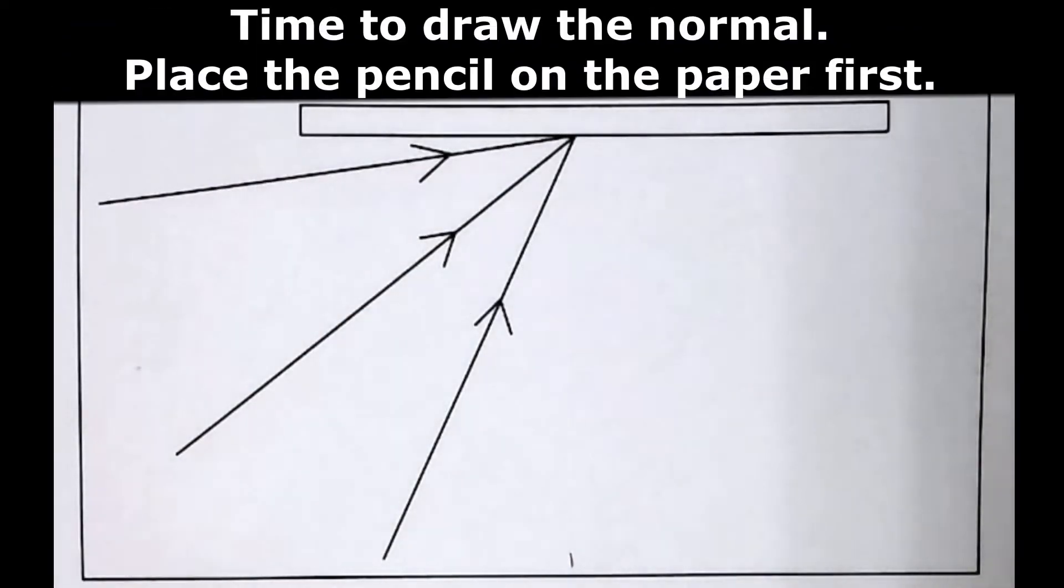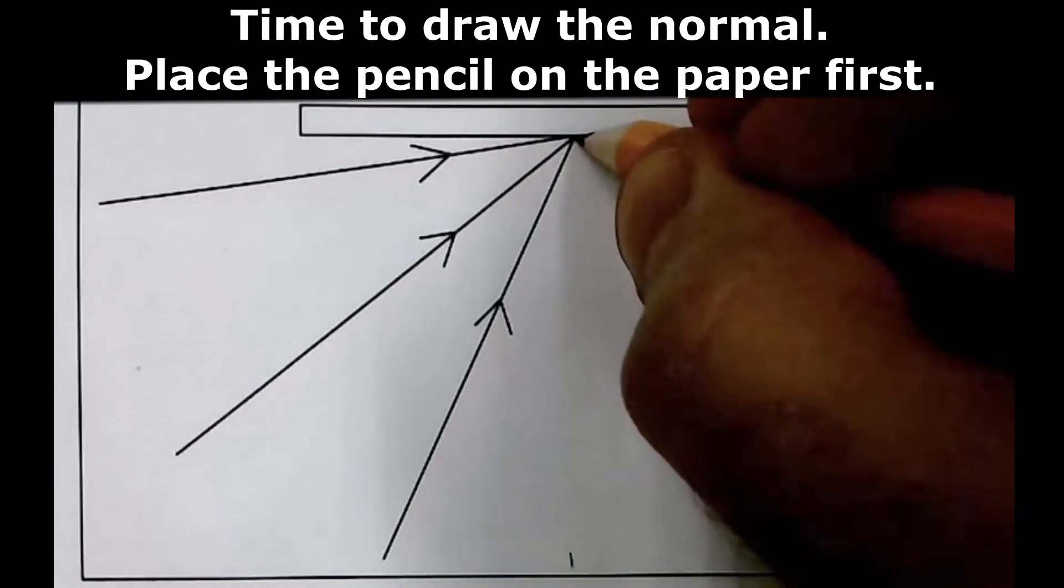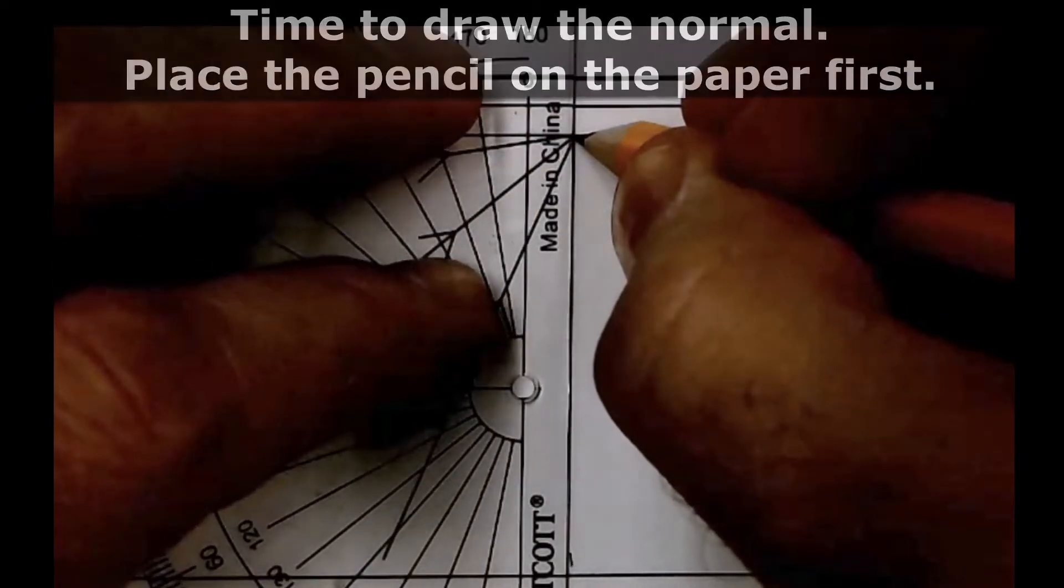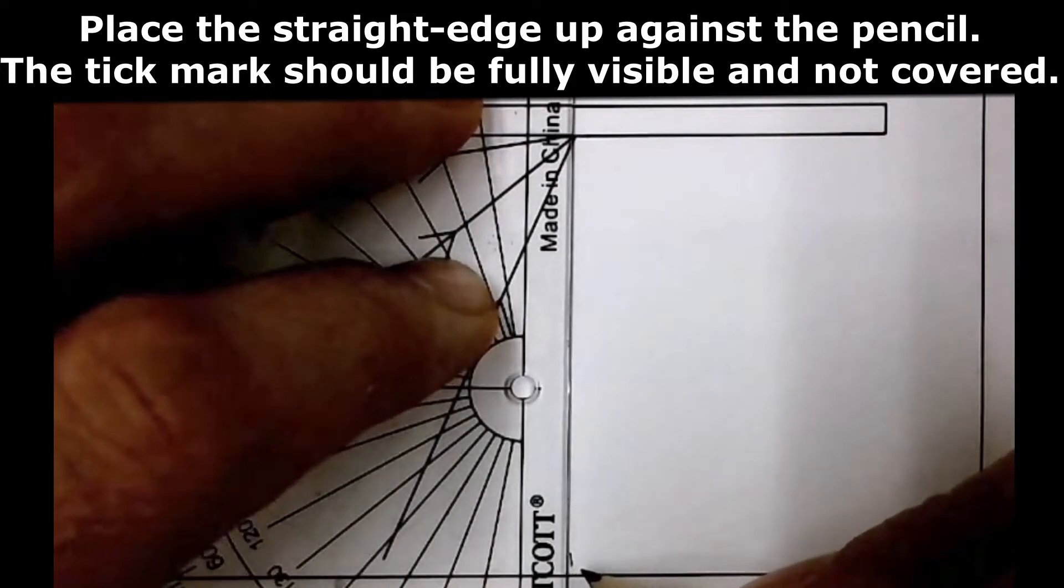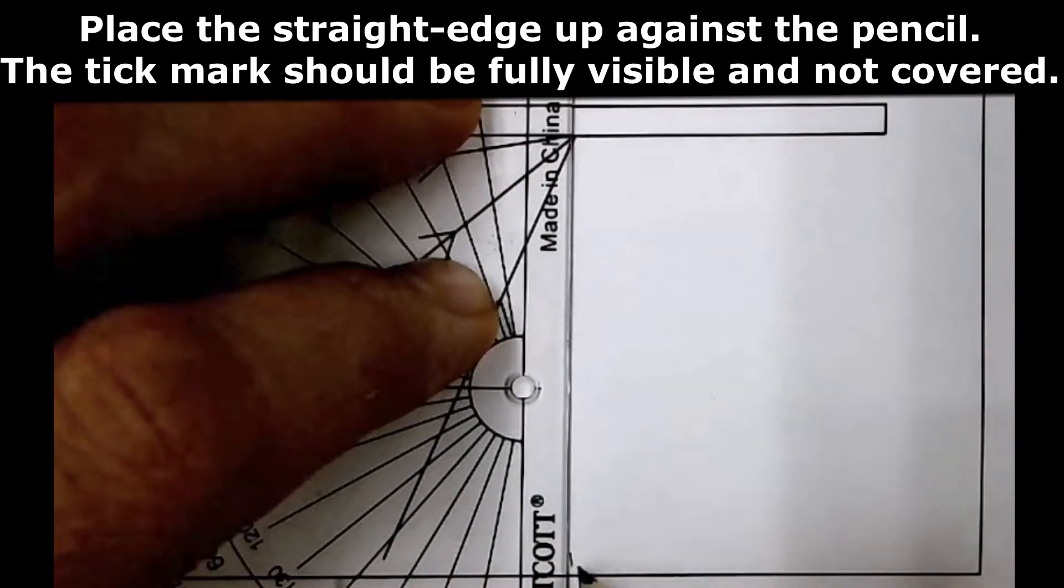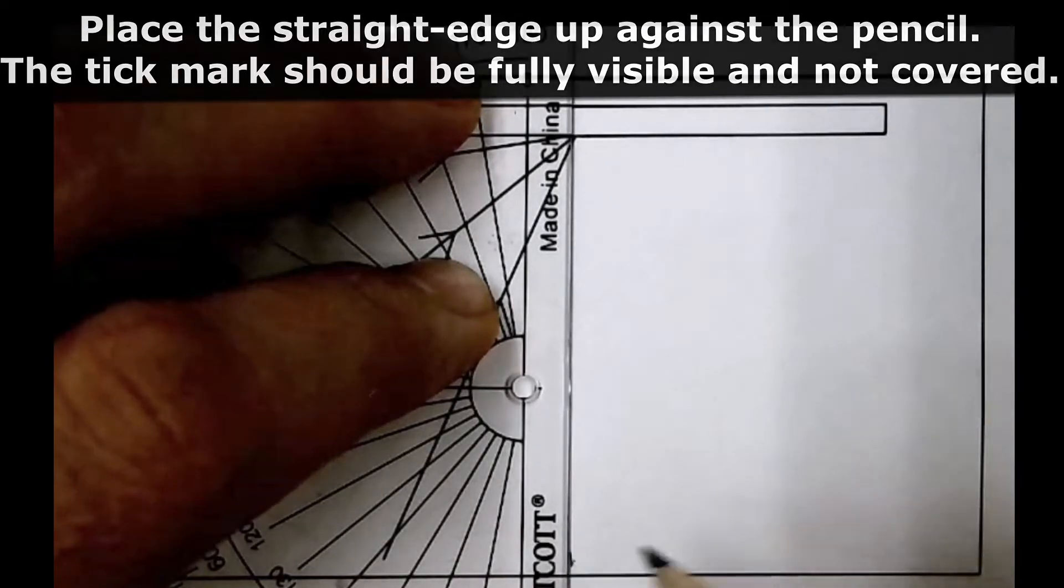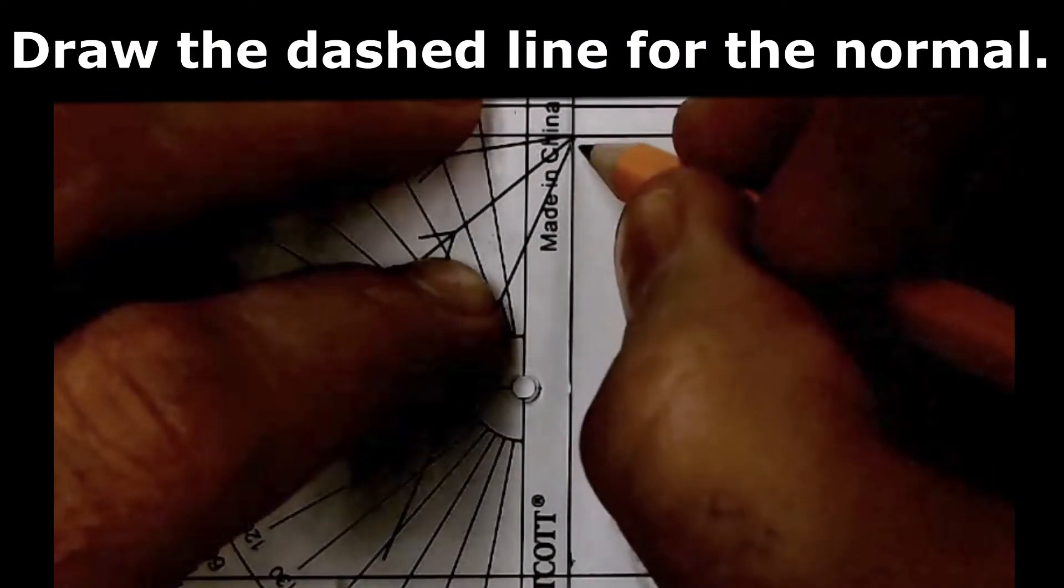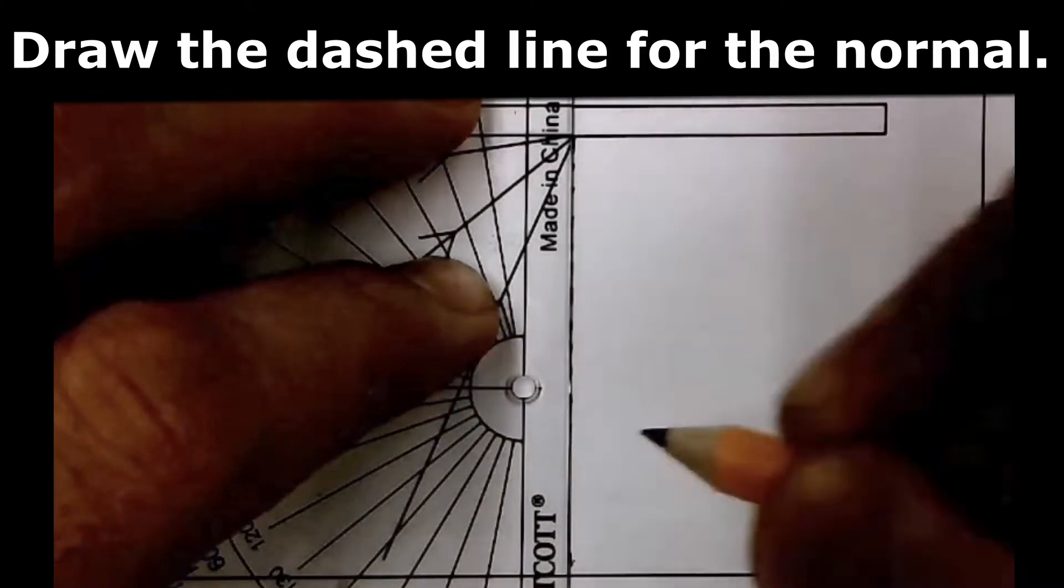Now it's time to draw the normal. Remember our technique for drawing lines. Place your pencil down first where you want the line to begin. Gently set the ruler against the pencil. Make sure the line that we want to arrive at is not covered by your ruler. So I have my pencil here. Now I can draw my dashed line representing the normal.